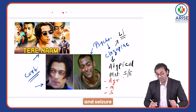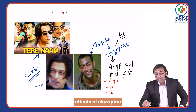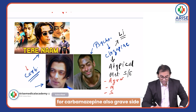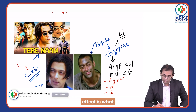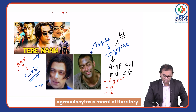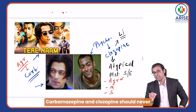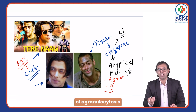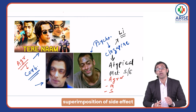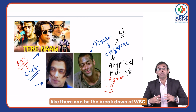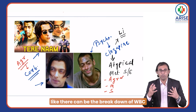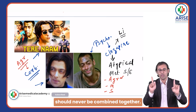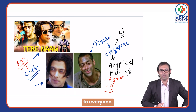The grave side effects of clozapine also include myocarditis and seizures. Both clozapine and carbamazepine share agranulocytosis as a grave side effect. The moral of the story: carbamazepine and clozapine should never be combined, due to the risk of superimposed agranulocytosis — breakdown of WBCs and neutrophils. These two drugs should never be given together.